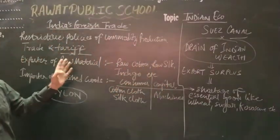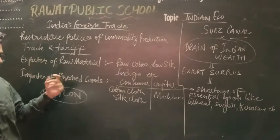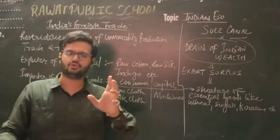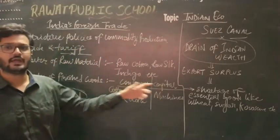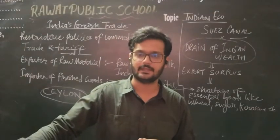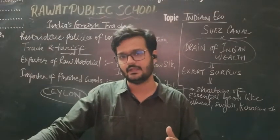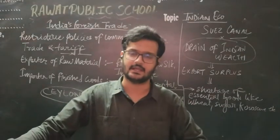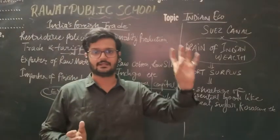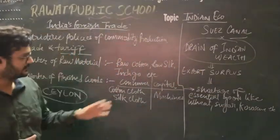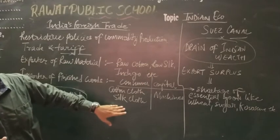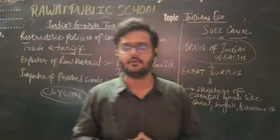So these raw materials were exported. We are going to export and import — consumer goods were imported as well as capital goods. Capital goods include machines used for production in industry and factories, all coming from Britain.